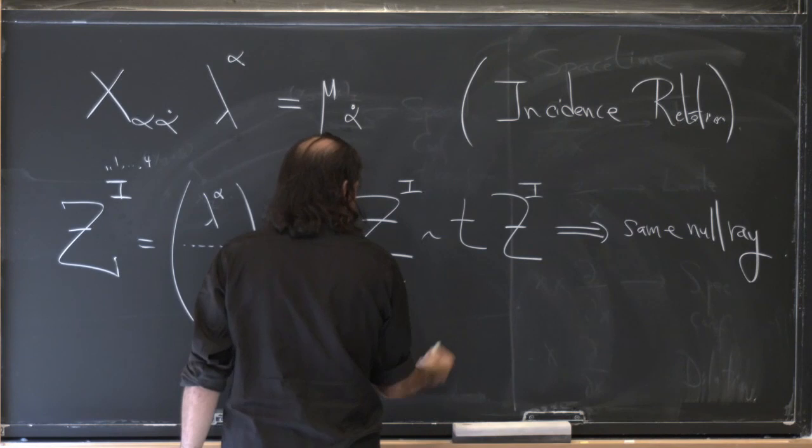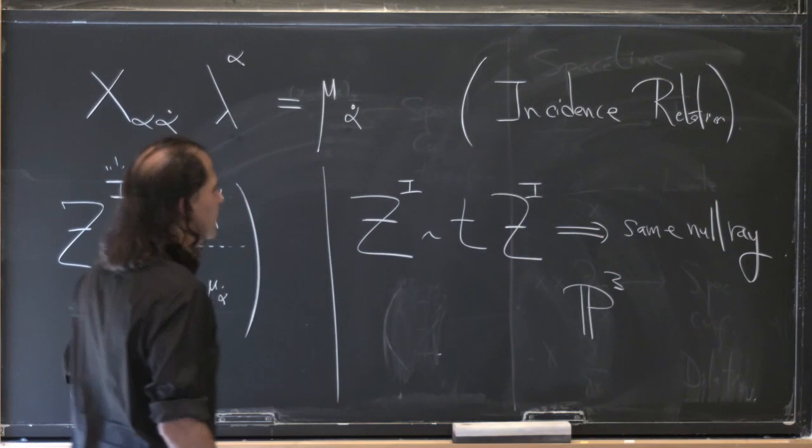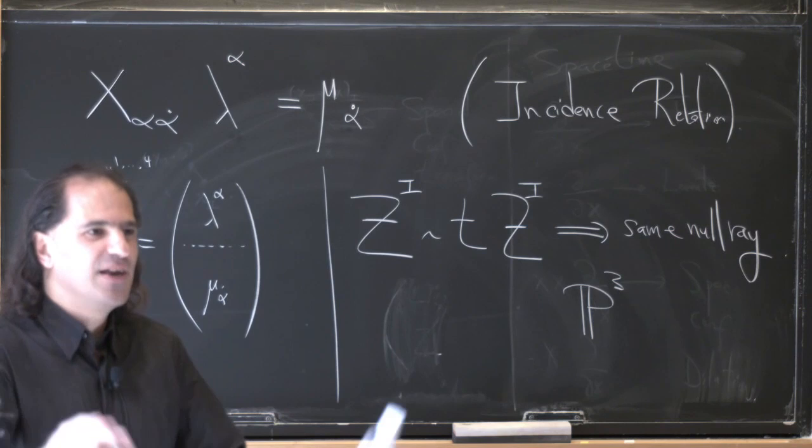So immediately, if you just think of this as a four-vector, it's not really a four-vector. The z's, after this equivalence, live in a three-dimensional projective space. And at the moment, I'm being sloppy — I'm not going to write RP3 or CP3, we'll just write P3. And depending on the context you're in, you know what you're supposed to do.